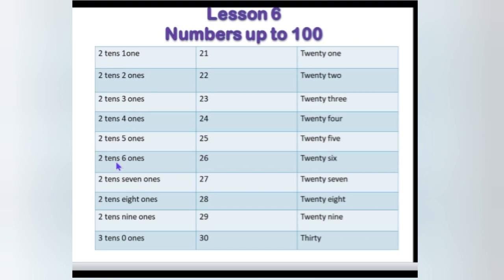2 tens, 6 ones — 26. Tell me, how many tens are in 27? Yes, 2 tens. And how many ones? 7 ones. Clear. Then 28, 29.